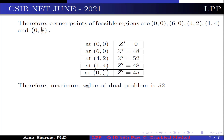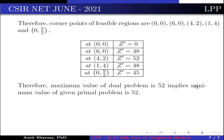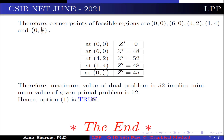Therefore, the maximum value of the dual problem is 52. This implies the minimum value of the given primal problem is also 52. Hence option 1 is correct. Thank you very much for watching my video. If you like the content, please do like, share, and subscribe to my channel. If you have any query, comment below.